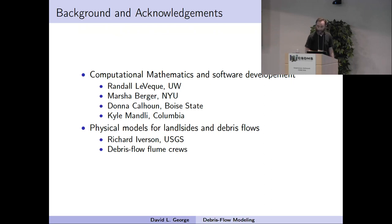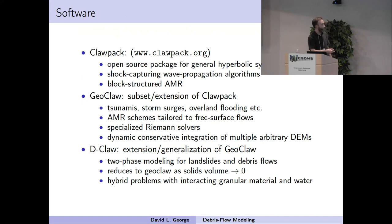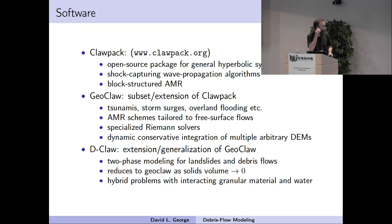The other line of research is the development of physical and mathematical models for landslides and debris flows. That's work done primarily with Dick Iverson of USGS and also debris flow flume crews. ClawPack is an open source software package developed by Randy Levesque and others for modeling general hyperbolic systems or wave propagation problems. We then created GeoClaw, a subset or extension of ClawPack devoted to tsunamis and wave propagation. Originally we called it TsunamiClaw, but then we realized it had features useful for other free surface flow problems. D-Claw is the software specifically aimed at granular fluid flows, or landslides and debris flows.